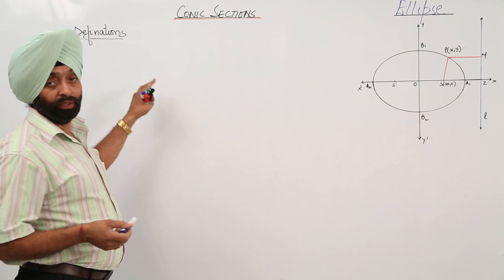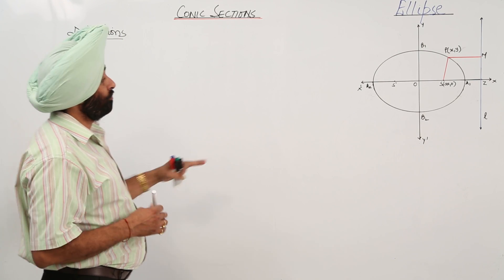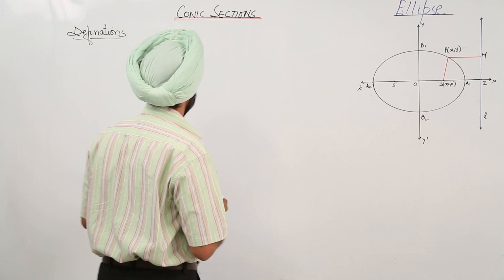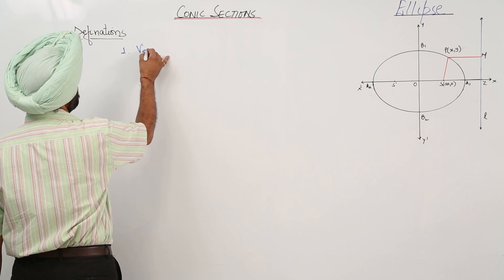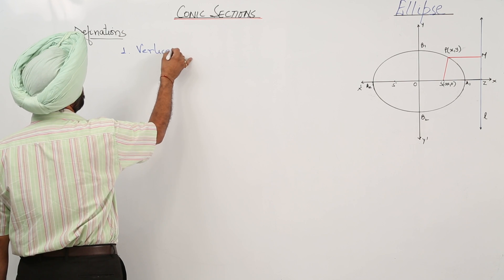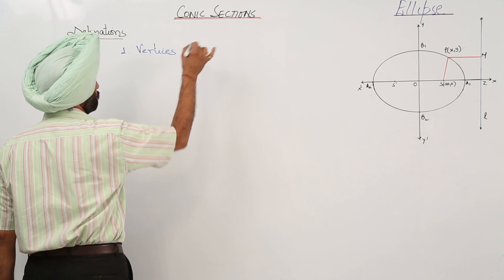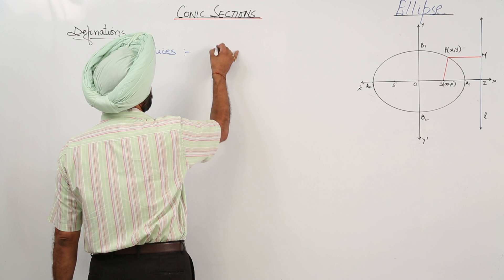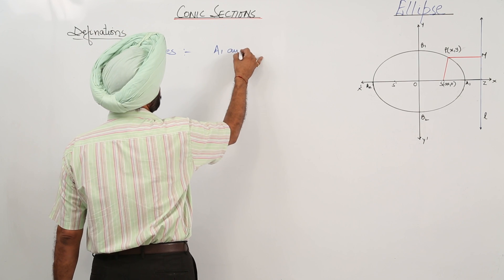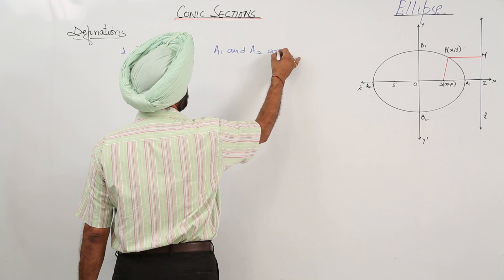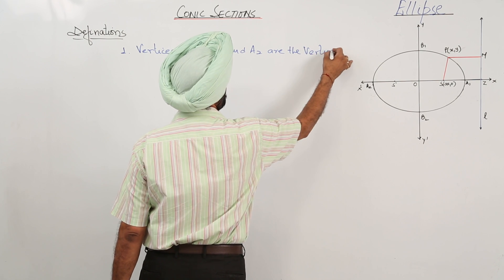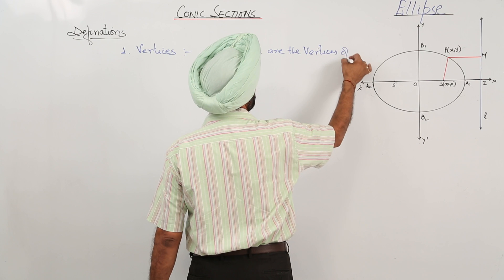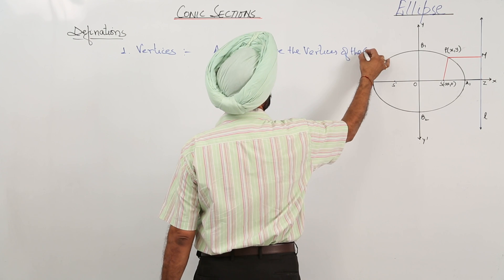Let us go for definitions related with the ellipse. Number 1 is vertices. A1 and A2 are the vertices of the ellipse.